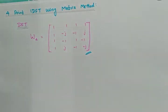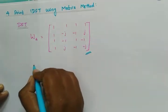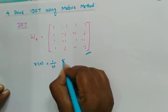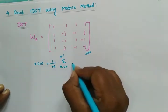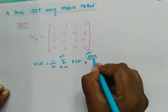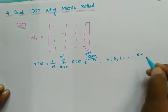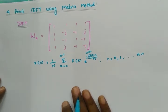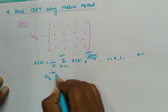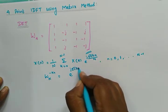For IDFT, we know the equation: x(n) is equal to 1/N times the summation from k=0 to N-1 of X(k) times e^(j2πkn/N), for n = 0, 1, and so on up to N−1. We have seen this previously. W_N^(−kn) is equal to e^(j2πkn/N).